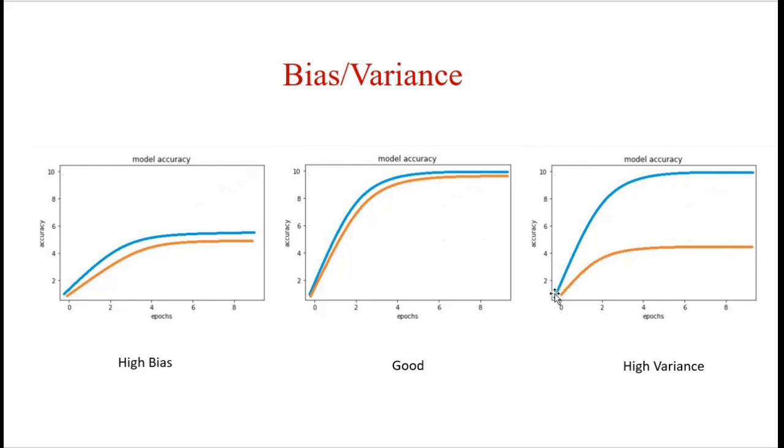Our model is trained well on the training dataset, but when it comes to the unseen data, its accuracy drops drastically. So here we can say that our model has learned a very complex function but it is not appropriate to work with unseen data. This indicates high variance.